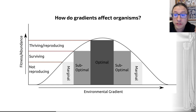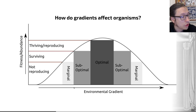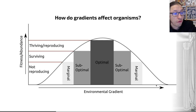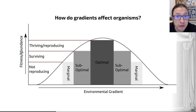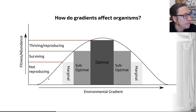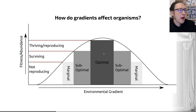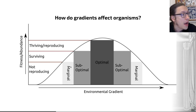Some ecologists have suggested that there is a bell curve of species performance along a gradient, as shown on this graph. If we imagine the x-axis as an environmental gradient — say the depth of water or salinity from fresh to marine environments — and the y-axis as the fitness and abundance of members of a given species, we can theorize a bell-shaped curve. At optimal environmental conditions, a species may be thriving and reproducing well. Moving away from that optimum, it becomes suboptimal — just surviving, perhaps not reproducing well. At the very edge of its range, it may not be able to reproduce at all.